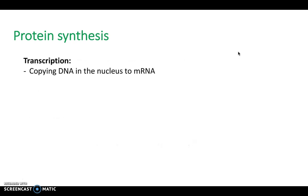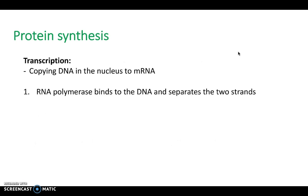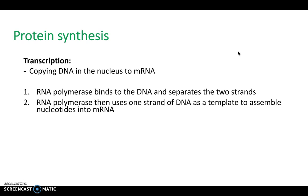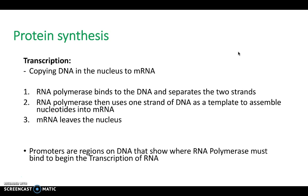Let's have a look at transcription first. This is the copying of DNA in the nucleus to mRNA. We'll look at it in word format first and then in picture format. RNA polymerase binds to the DNA and separates the two strands. RNA polymerase then uses one strand of DNA as a template to assemble nucleotides into mRNA. The mRNA then leaves the nucleus.